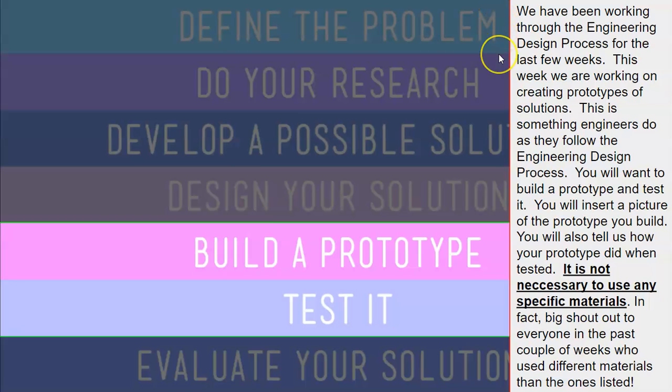We have been working through the engineering design process for the last few weeks. This week, we are working on creating prototypes of solutions. This is something engineers do as they follow the engineering design process. You will want to build a prototype and test it. You will insert a picture of the prototype you build. You will also tell us how your prototype did when tested. It is not necessary to use any specific materials. In fact, big shout out to everyone in the past couple of weeks who used different materials than the ones listed. That was awesome.